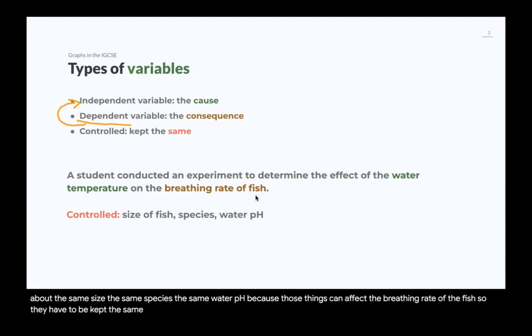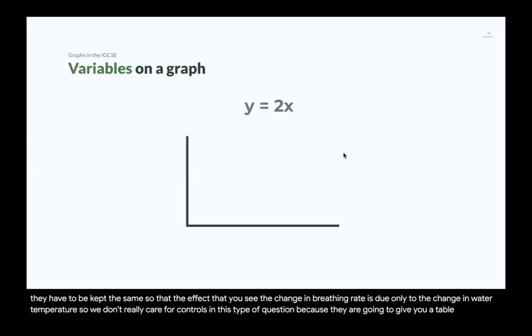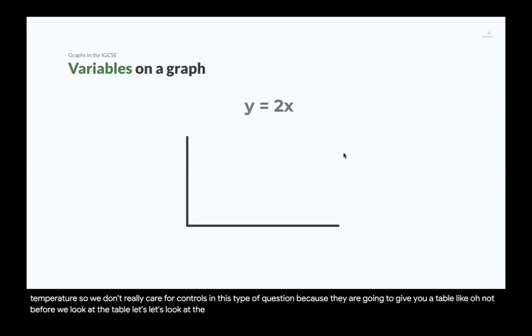So, they have to be kept the same so that the effect that you see, the change in breathing rate, is due only to the change in water temperature. So, we don't really care for controls in this type of question, because they are going to give you a table. Not before we look at the table, let's look at the graph itself. Well, graphs will have two axes. In which do we put each variable?